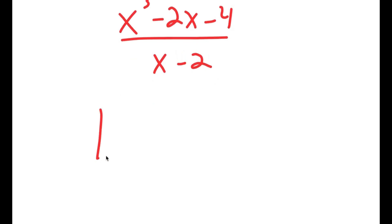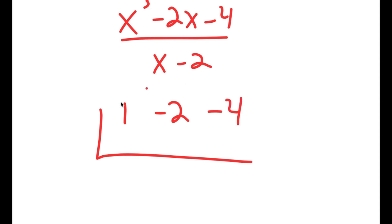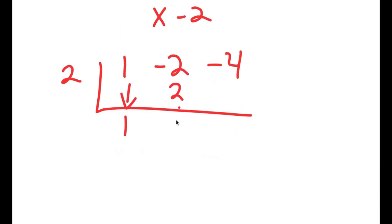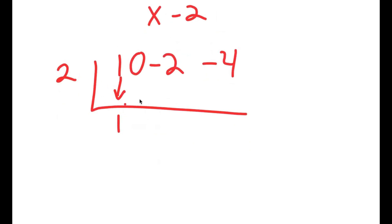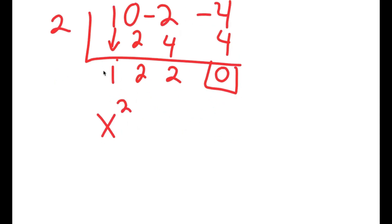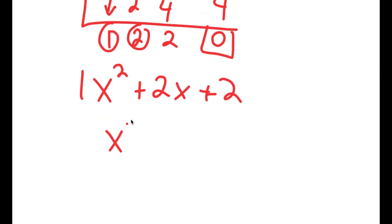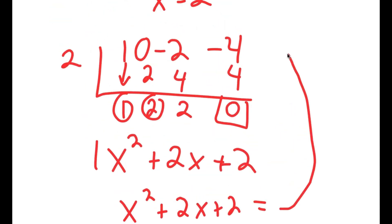To solve this we're going to use synthetic division. Our coefficients for the numerator are 1, 0 — because there's no x² term — negative 2, and negative 4, with a 2 on the side. Bringing down 1: 2 times 1 is 2; 0 plus 2 is 2; 2 times 2 is 4; negative 2 plus 4 is 2; 2 times 2 is 4; negative 4 plus 4 is 0. We get a remainder of 0, giving us x squared plus 2x plus 2.